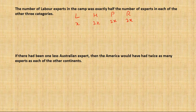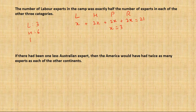We know the total number of experts is 21, so we make an equation: x + 2x + 2x + 2x = 21, giving us x = 3. That means there are 3 experts from labor and 6 each from health, population, and refugee.